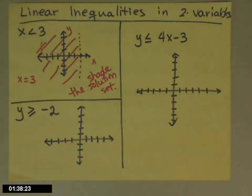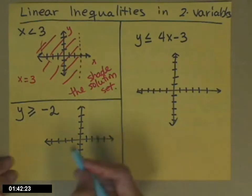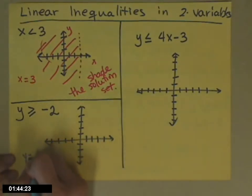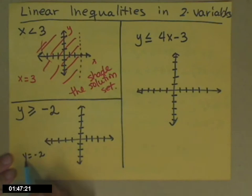Looking at the next one, we need the y's that are greater than or equal to negative 2. So again, I start by graphing y equals negative 2. So if I have a line that's just y—